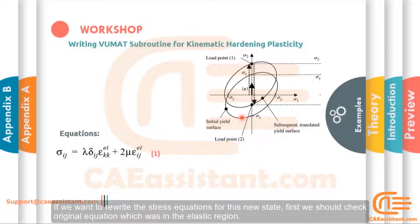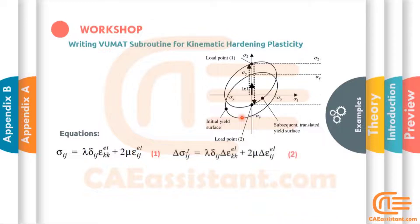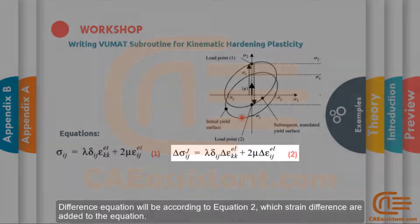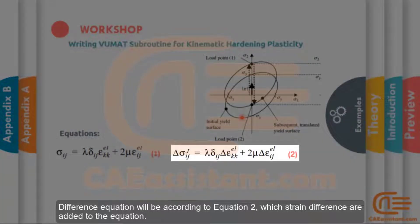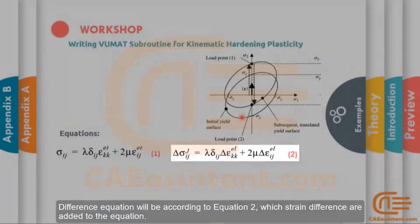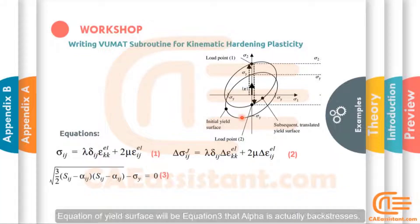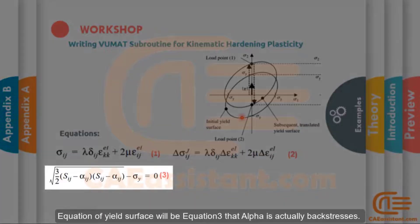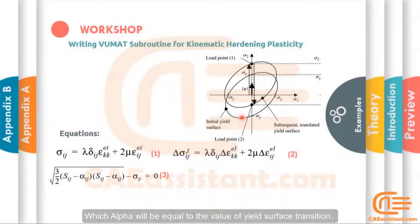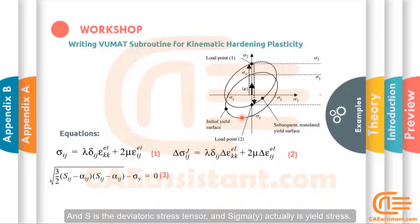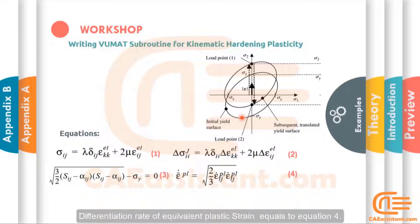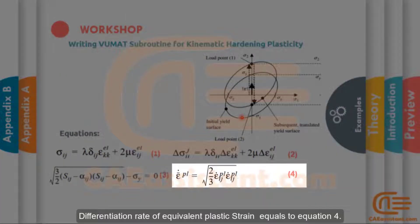If you want to rewrite the stress equations for this new state, first we should check the original equation which was in the elastic region. The difference equation will be according to equation 2, where strain differences are added to the equation. The equation of yield surface will be equation 3, where alpha is actually the back-stress tensor. Alpha will be equal to the value of yield surface translation. S is the deviatoric stress tensor, and sigma_y is the yield stress. The differentiation rate of the equivalent plastic strain equals equation 4.